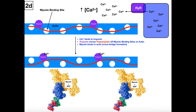In the sarcomere we have several proteins — four in fact that we need to understand. First, we have actin. Actin is composed of a bunch of little monomers, shown here in blue. It composes the thin filaments. Myosin is going to be part of the thick filaments. It's also worth noting that myosin is going to be an ATPase, meaning it can bind ATP and hydrolyze it into ADP.